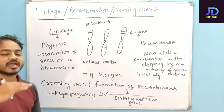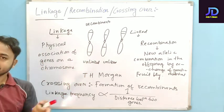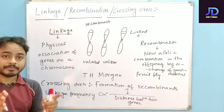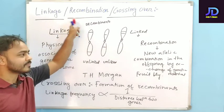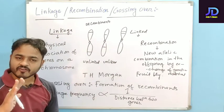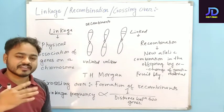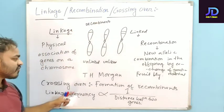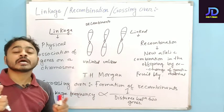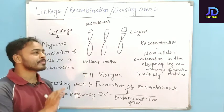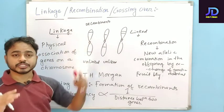This is all about linkage, recombination, and crossing over. To review: linkage means the physical association of genes on a chromosome. Recombination is the formation of new allele combinations by exchange of genetic material. Crossing over is the formation of recombinants between the two synapsed homologous chromosomes.